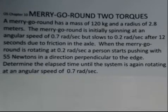At the start of a time interval, the merry-go-round is spinning with an angular speed of 0.7 radians per second. There's friction in the axle, so the merry-go-round slows down to 0.2 radians per second after 12 seconds.